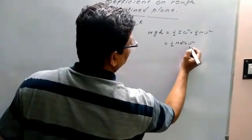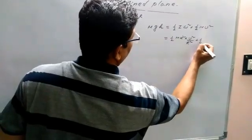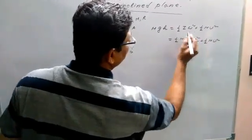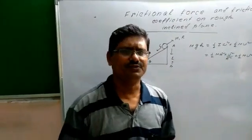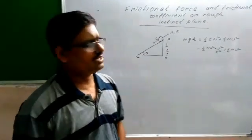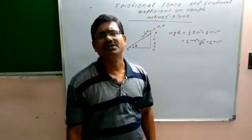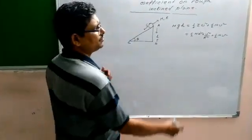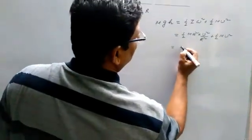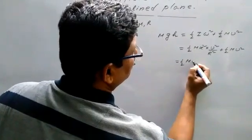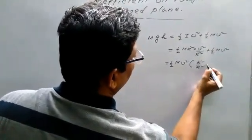Omega squared can be replaced by v squared by r squared, so we get half mk squared times v squared by r squared. For rolling motion, v equals r omega, therefore omega squared equals v squared by r squared. This simplifies to give us the term k squared by r squared plus one, which is equation number one.